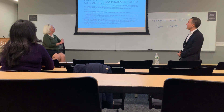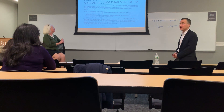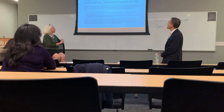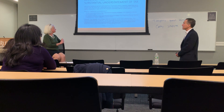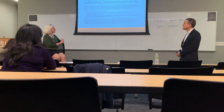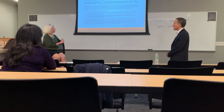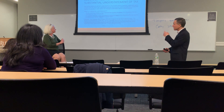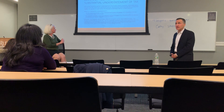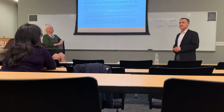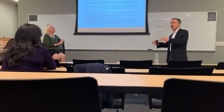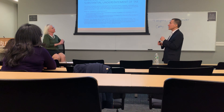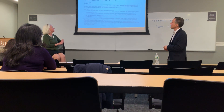Example: Lucy taxpayer fails to report $50,000 of income on her 1040 for 2018, resulting in additional tax of $30,000. The tax originally reported was $100,000. The additional tax of $30,000 exceeds the greater of 10% of the tax required to be shown ($130,000 × 10% = $13,000) or $5,000. There is a substantial understatement, and potentially a 20% accuracy-related penalty.